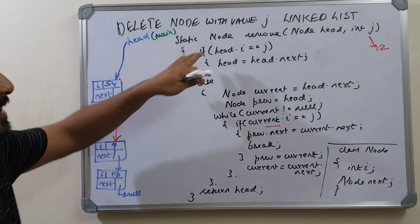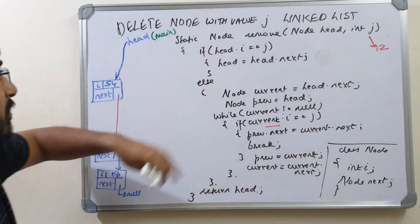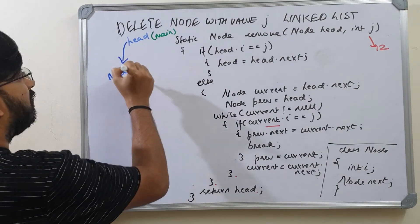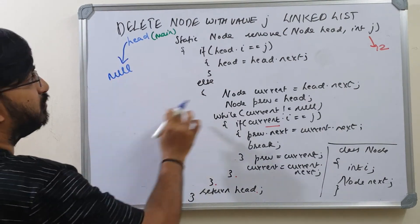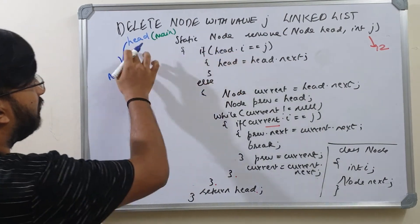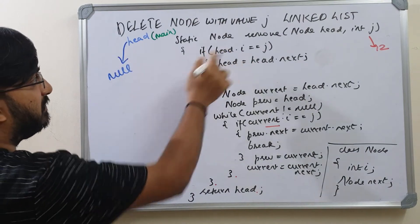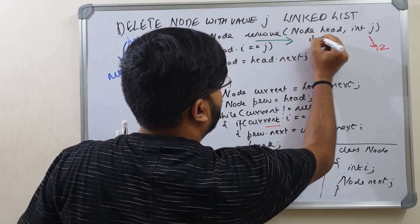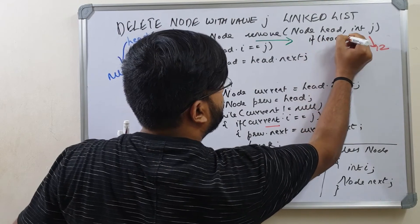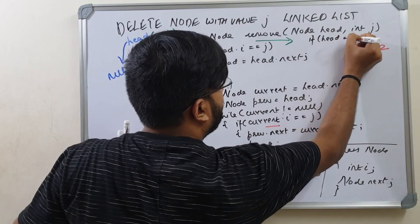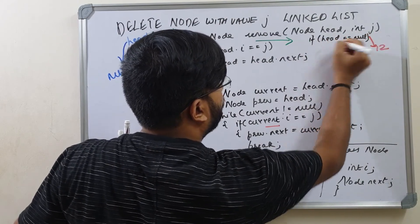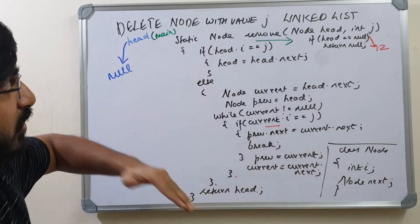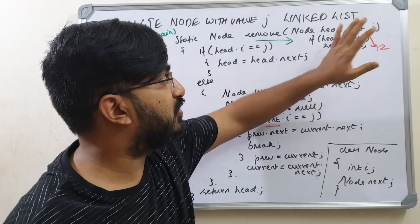There is one check we need to add: if head is null, return null. If you pass an empty list, head is null, and doing head dot i would throw a null pointer exception. So we add the condition — if head is null, return null — at the start of the method.